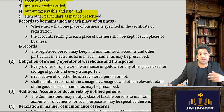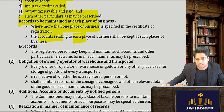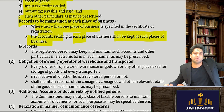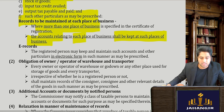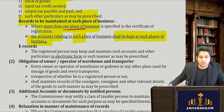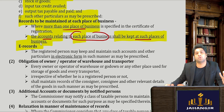Do I need to maintain the records at every single place? The answer is yes. When there is more than one place of business, the accounts related to each place of business shall be kept at that place of business. So if I have a Bombay branch, I have to maintain all the records of the Bombay branch there; if I have a Delhi branch, I'll maintain all the records of the Delhi branch in that place.